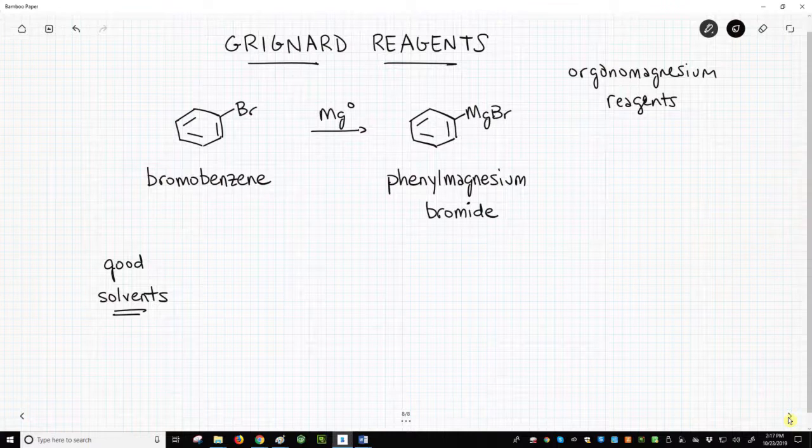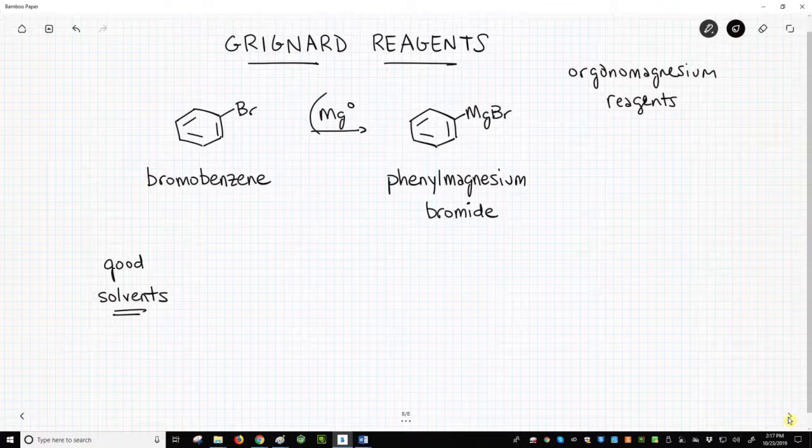We have a reaction on the screen. In this reaction, bromobenzene reacts with magnesium metal to give an organomagnesium product. In this case, the product is phenylmagnesium bromide.